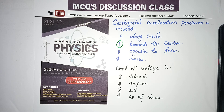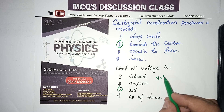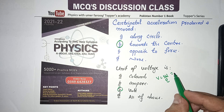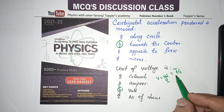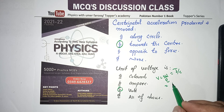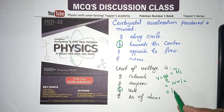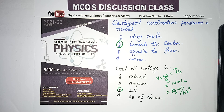Next MCQ: Unit of voltage — it is volt. V = W/Q (joules per coulomb). It can also be expressed as newton·meter per coulomb, or kilogram·meter² per ampere·second³.